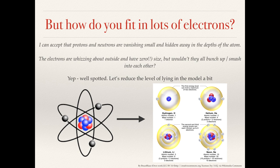So at this point, you might be thinking to yourself, well, okay, if I've got a heavy element, a metal perhaps, with lots of protons, it needs lots of electrons. How do they all fit in? Well, congratulations, you've found one of the lies in the lies to children model of the atom. We need to reduce the level of lying in the model a bit. So we need to look at the concept of shells.